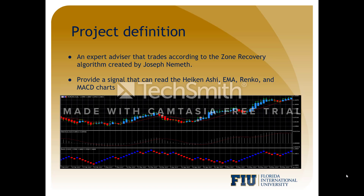Next, to exit: when the Wrinkle chart changes color from blue to red, first, if there's profit, then we can exit and take the profit. Second, if there is no profit but the entry conditions are still intact, then we can improve our cost basis by using dollar cost averaging. And the third and final rule, which is the most important, if there is no profit and the entry conditions are no longer intact, then we can execute zone recovery.